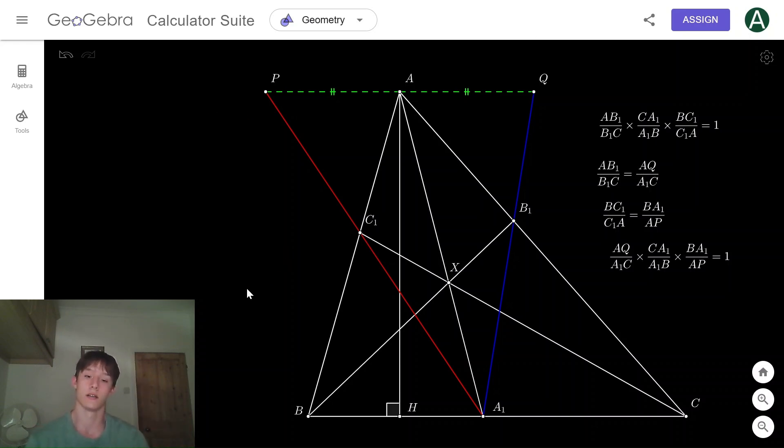Now the main idea is that we can use a theorem called Steiner's line. Steiner's line basically states that if you have a triangle ABC and a point on the circumcircle, and you take this point on the circumcircle and reflect about the three sides of the triangle, the three points will lie on one line.